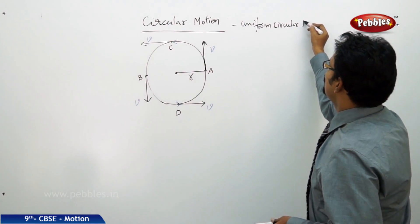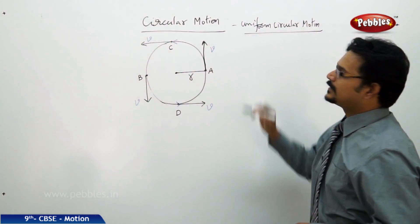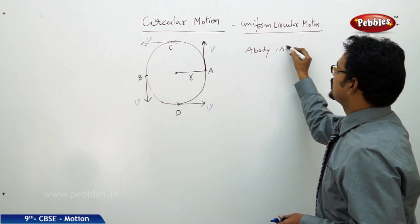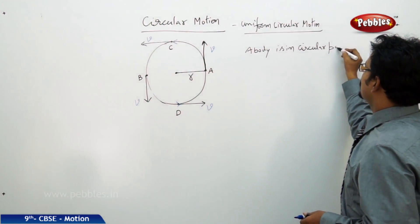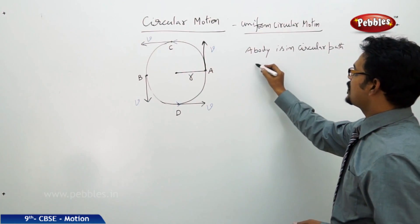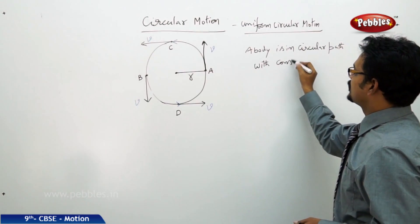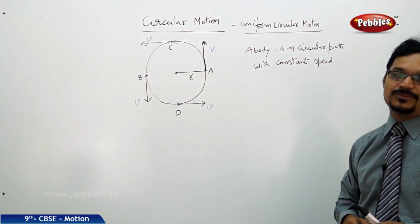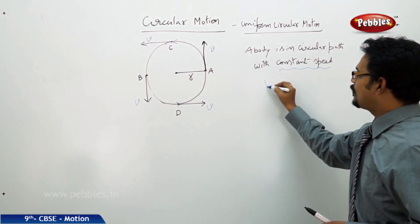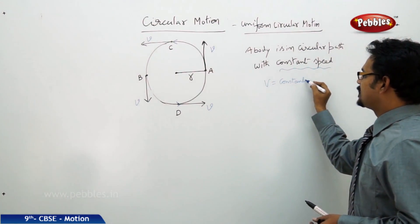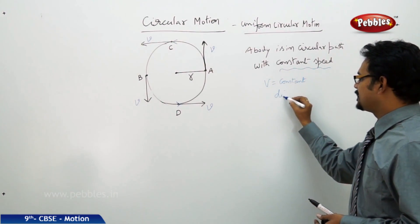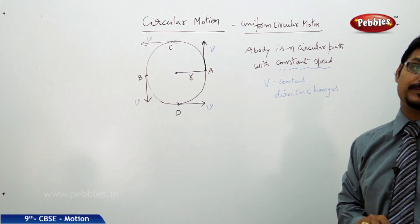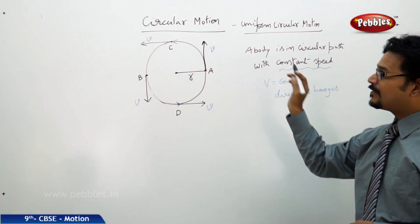So in physics, circular motion is actually called uniform circular motion. The definition says: a body is in a circular path with constant speed — then it is called uniform circular motion. As I mentioned, speed V is constant, but its direction changes.